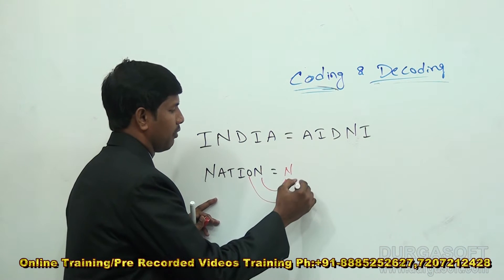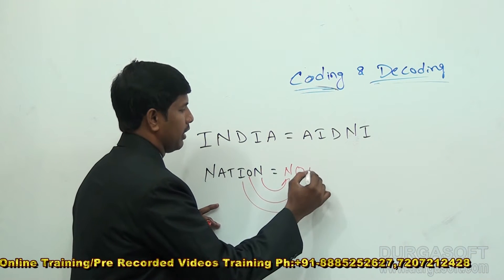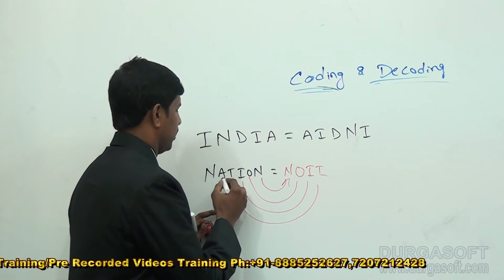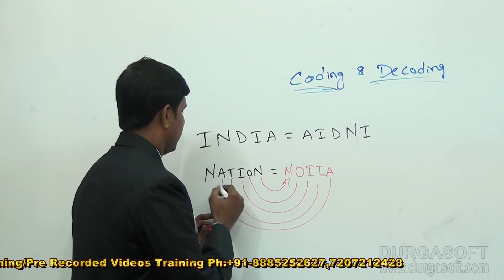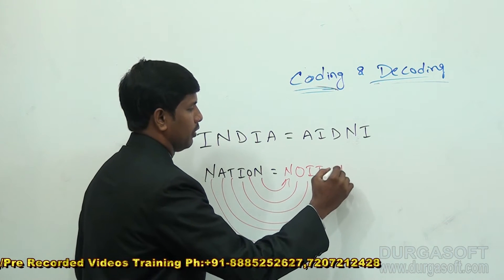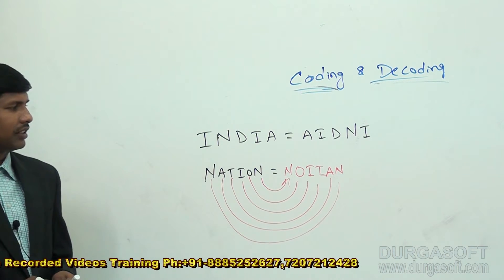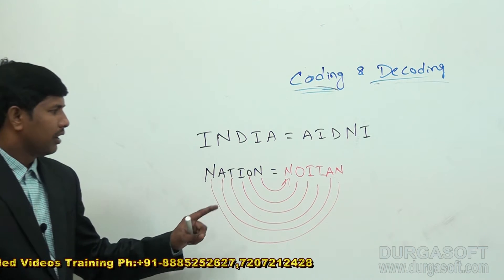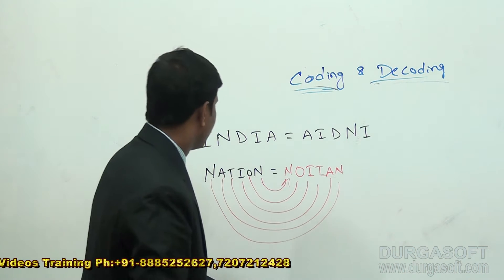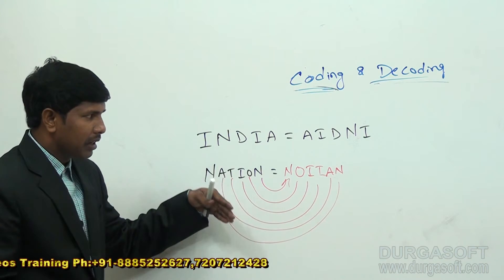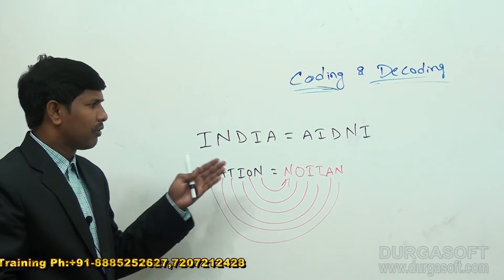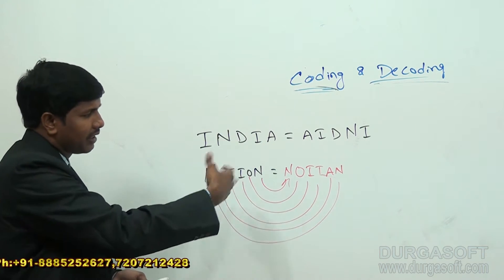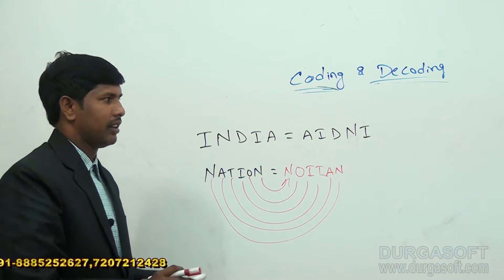Simply, we need to write the letters in the reverse order: first N, then O, then I, then T, then A, then N. So, simply we are writing in the reverse order — that is the code. In this way, we can expect the answer depending upon the logic involved.